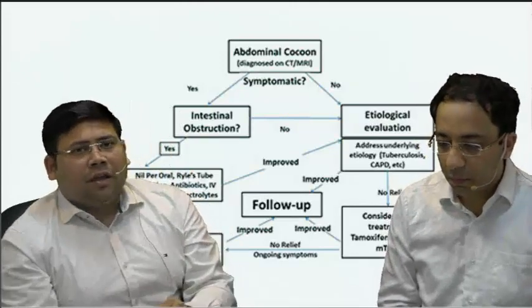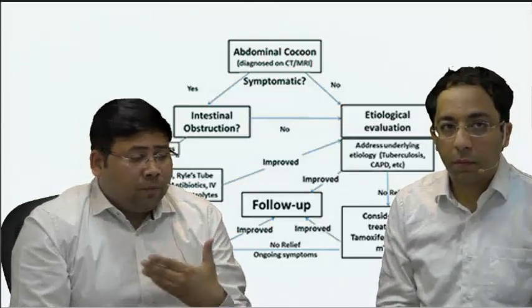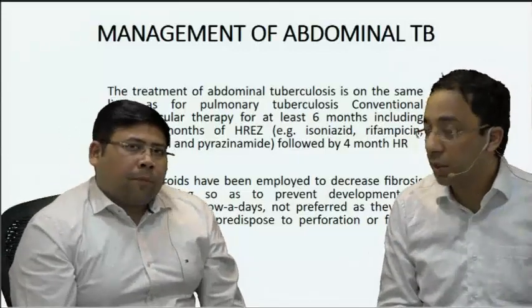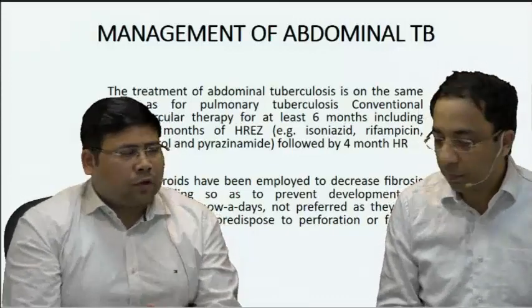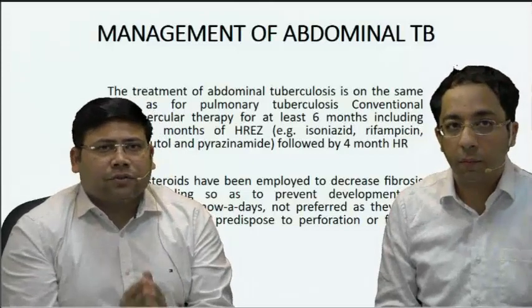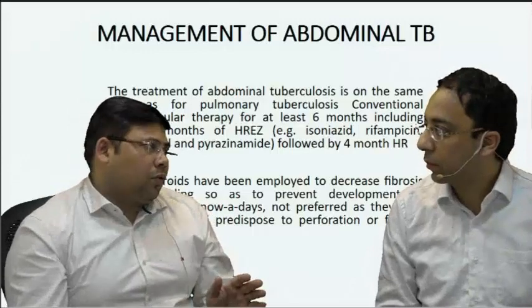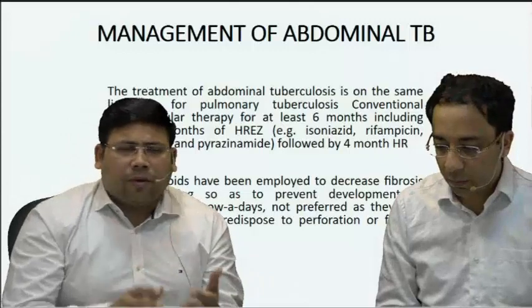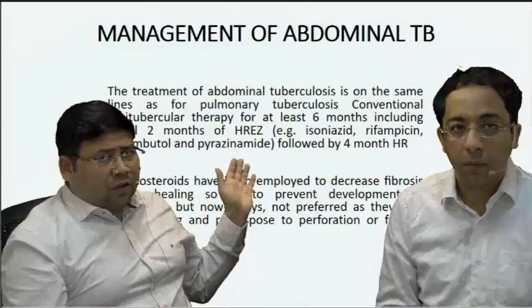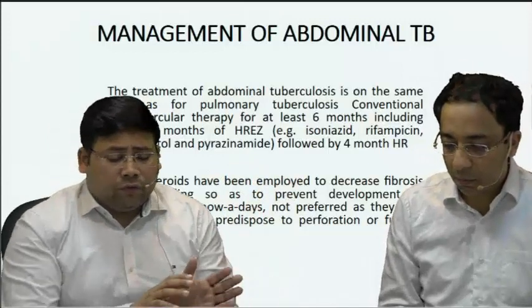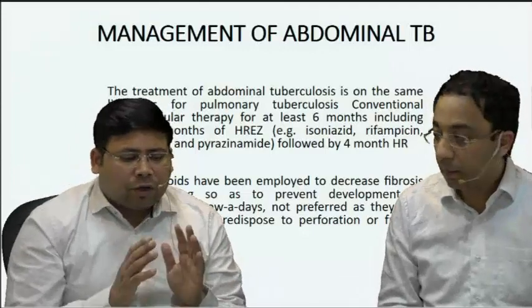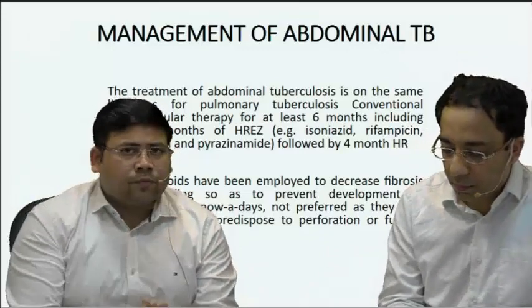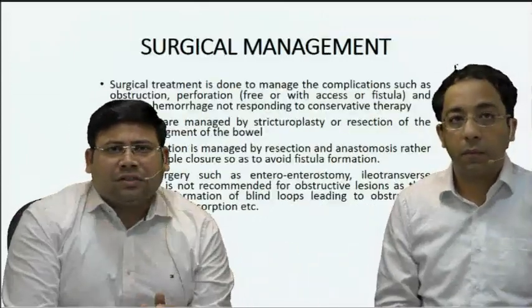Steroids and tamoxifen are not preferred as a first-line approach because they delay healing and reduce the inflammatory response. However, we do give them because they prevent adhesions — and since this is already a fibrosing kind of disease, they reduce the incidence of future obstructions. For tubercular cases, if the patient responds to initial conservative management, we follow the same protocol as for pulmonary tuberculosis: a six-month therapy — two months of intensive phase and four months of continuation phase.